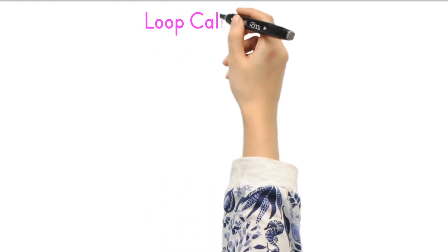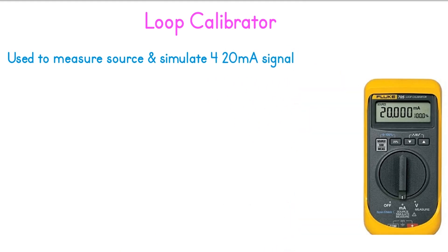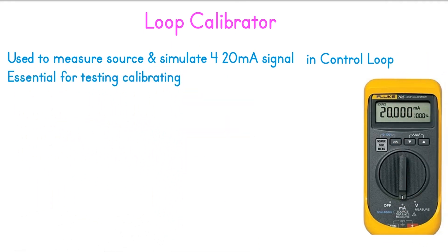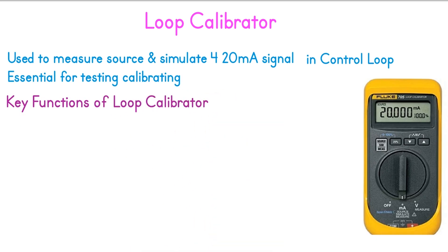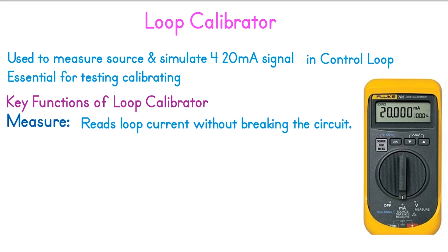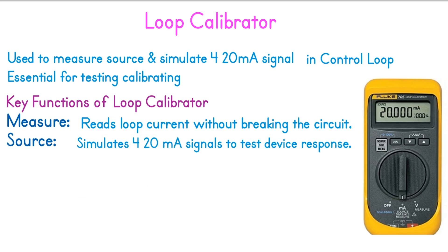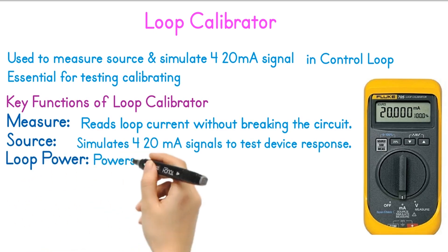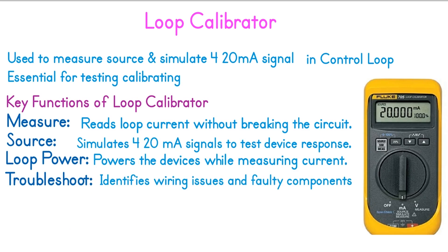Loop Calibrator. A loop calibrator is a portable device used to measure, source, and simulate 4 to 20 mA signals in control loops. It is essential for testing, calibrating, and troubleshooting devices like transmitters, controllers, and actuators. There are four key features of a loop calibrator. First, Measure: reads loop current without breaking the circuit. Second, Source: simulates 4 to 20 mA signals to test device response. Third, Loop Power: powers the devices while measuring current. Fourth, Troubleshoot: identifies wiring issues and faulty components.